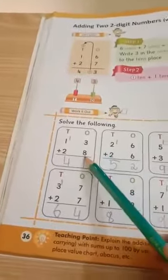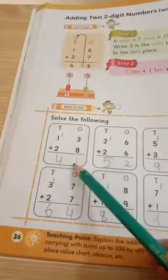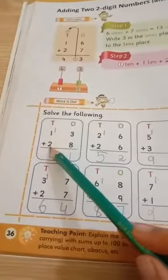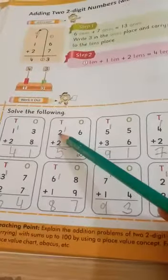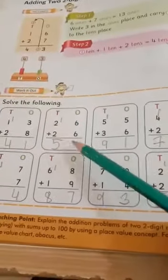3 plus 8: 8, 9, 10, 11. 1 carry kia. 1 plus 2, 3 plus 1, 4. 41. 6 plus 6, 12. 2 plus 1, 2, 2, 4 and 1, 5. 52.